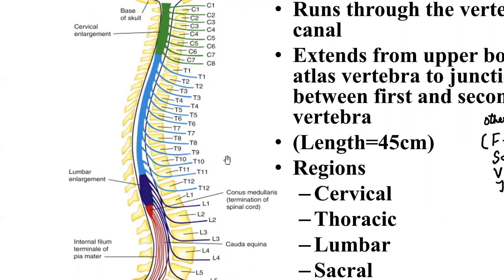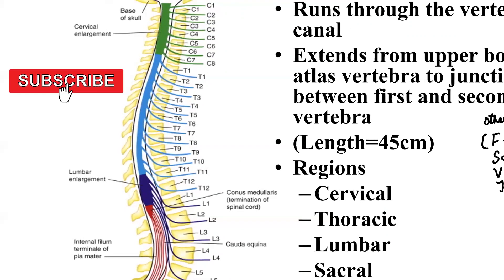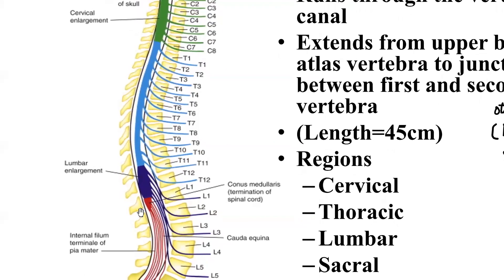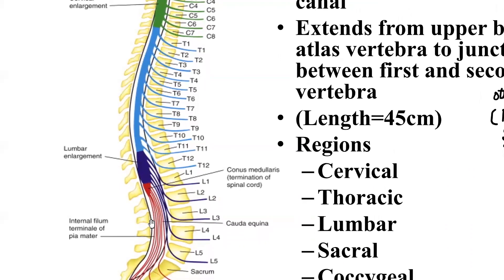The length of the spinal cord from C1 to L1 vertebra is roughly about 45 cm in adult males and about 42 cm in females. The weight of the spinal cord is roughly about 30 grams. The lower end of the spinal cord at the level of the first lumbar vertebra ends in a conical elongated manner, known as the conus medullaris. Beyond this level, the spinal cord continues only as a thin filament of pia mater known as the filum terminale.